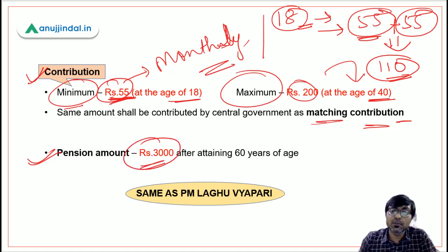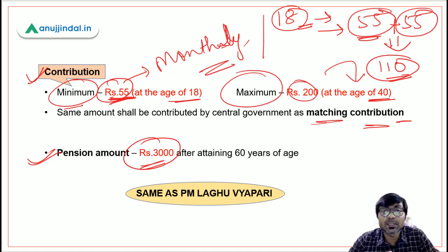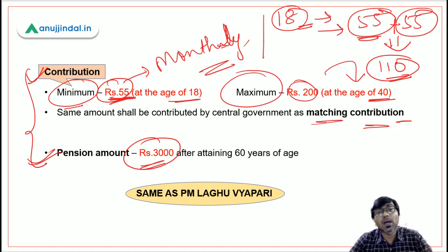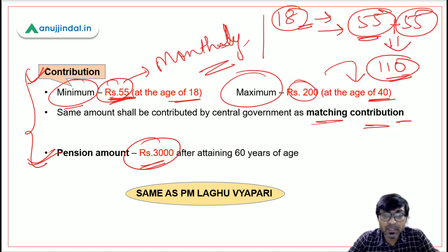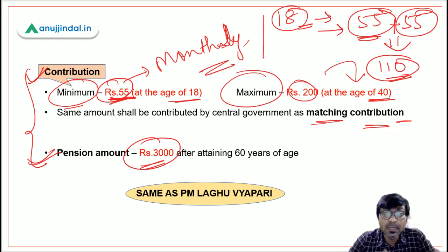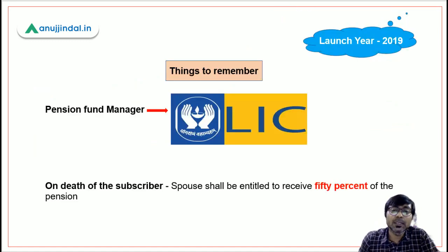After attaining 60 years of age, the enrolled subscriber will receive a pension of ₹3000 per month. To help remember this: the contribution amounts and pension amount in PM Kisan Mandhan Yojana are identical to those in PM Laghu Vyapari Mandhan Yojana. So if you remember that scheme, you don't need to separately memorize contribution and pension amounts for this one.